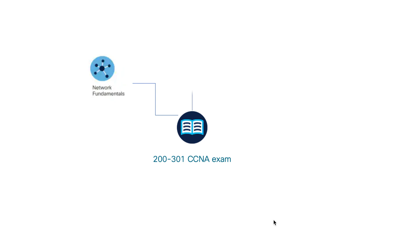The second domain comprises network access, which includes Layer 2 technologies such as VLANs, trunks, Layer 2 discovery protocols, EtherChannel, spanning tree and wireless access point modes.